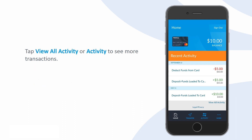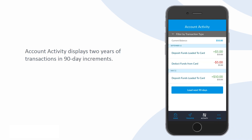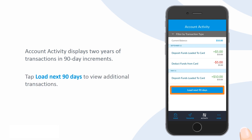To view the rest of your transactions, tap either View All Activity at the bottom of the Recent Activities section or Activity in the bottom navigation bar. Both options take you to the Account Activity screen, which contains up to two years of transactions displayed in 90-day increments. Scroll down and tap Load Next 90 Days to view older transactions.